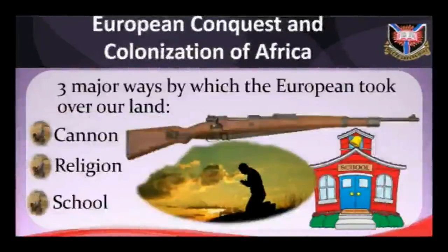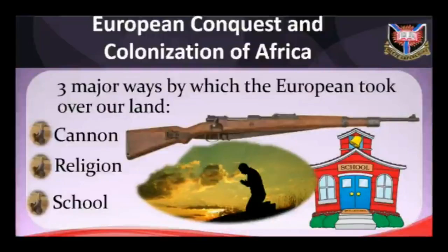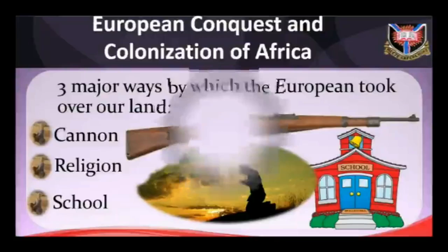The three major ways by which the Europeans took over our land were: cannon, religion, and school. This led to the African lamentation: 'When they first came, they had the Bible; we had the land. Now we have the Bible; they have our land.' This lamentation is believed to have originated from Kenya. The story goes that when the white man came with the Bible amid the rich African land, he told Africans to close their eyes for prayer. When prayer was going on, he put the Bible in the hands of Africans and prepared documents entitling him to the land.